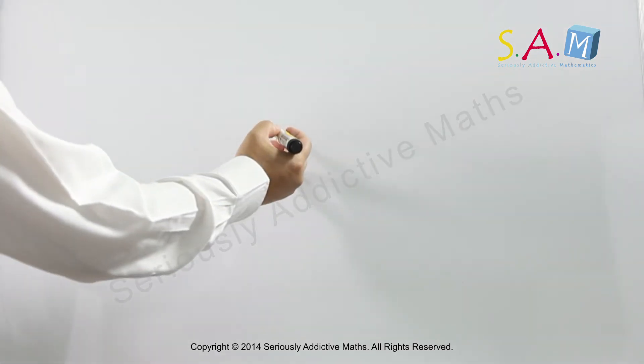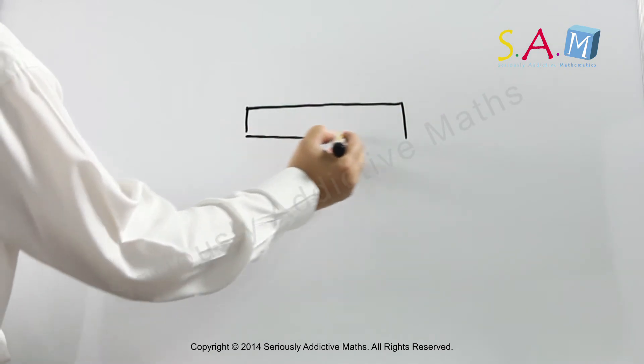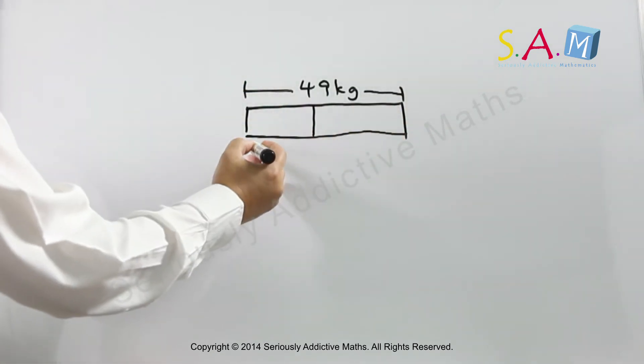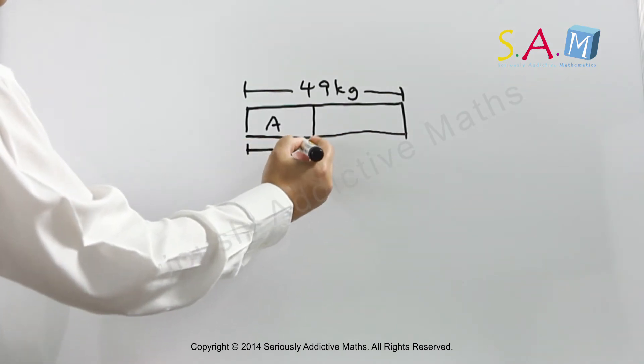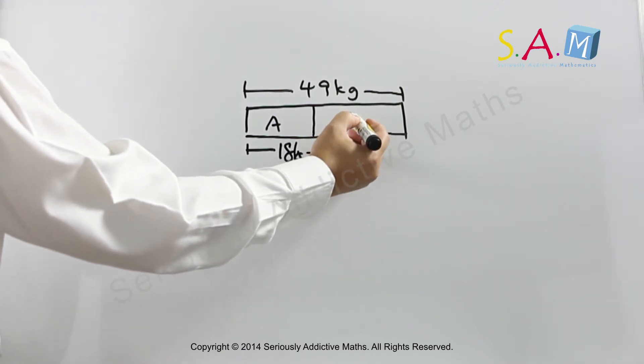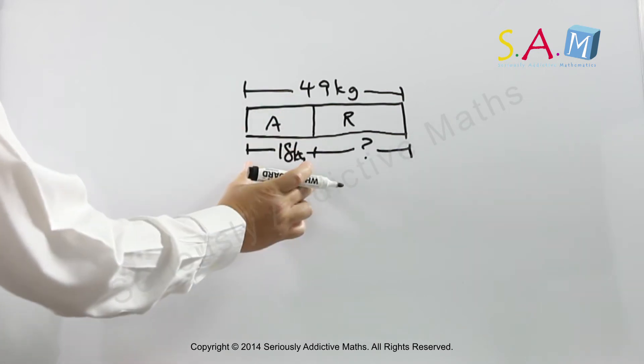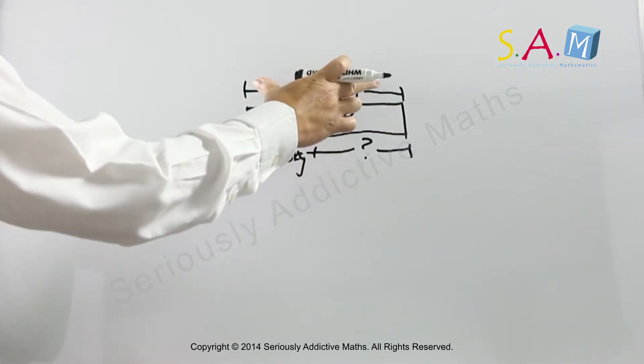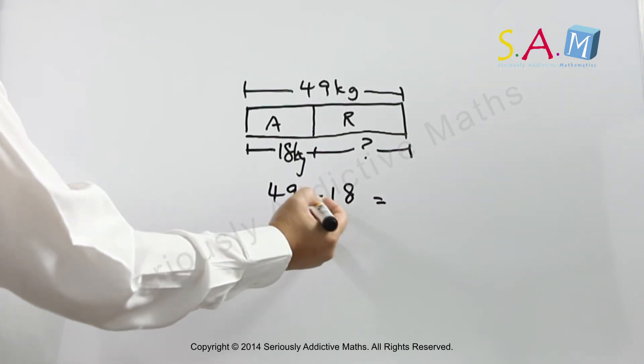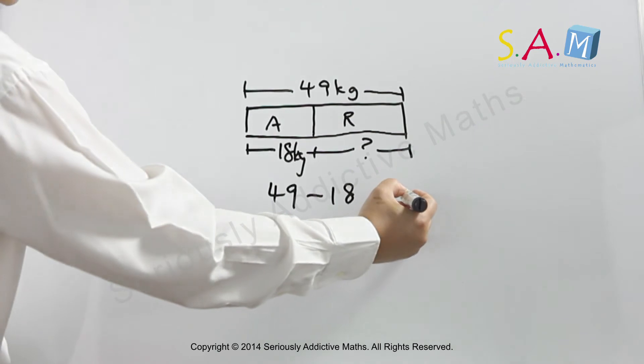Alan and Gretel weigh a total of 49 kilograms. Alan is 18 kilograms, so what is the weight of Gretel? We know that Alan is 18. The whole take away the part, we will get the weight of Gretel, which is 31 kilograms.